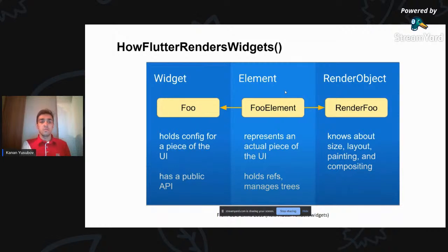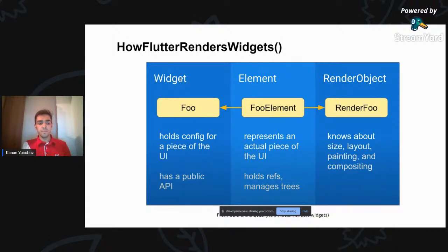Növbəti danışmaq istədiyim mövzu Flutter-da render prosesidir. Burada üç hissəyə bölünür: Widget, Element və Render Object. Bu, Flutter-ın render tree-sidir. Flutter əslində tree data structure işlədir. Widget hissəsi bizim yazdığımız koddur. Element-lər widget və render object arasında bir hissədir - widget haqqında müxtəlif informasiyaları özündə saxlayır, onun referansını saxlayır və widget-də baş verən dəyişiklikləri render object-i trigger edir. İkisi arasında körpü rolunu oynayır.